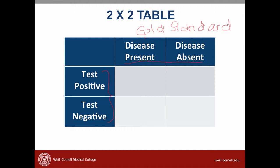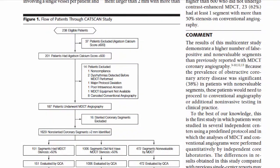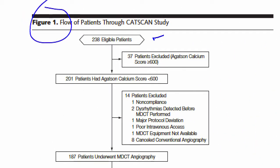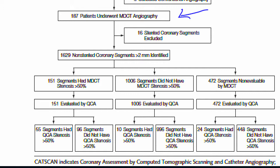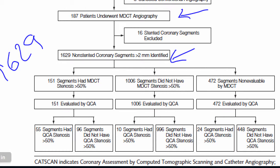Let's look at the article to see if we can find the numbers to fill in this table. I read through the article and found the best information was available in figure 1. In this figure, the researchers show what happened to each of the patients. 238 patients were eligible for the study, and a total of 187 patients had both the CT scan and the angiography. Interestingly, the researchers evaluated each of the coronary segments — the multiple different arteries surrounding the heart — so the subsequent analysis is based on arteries, not on patients.